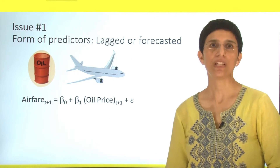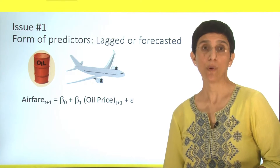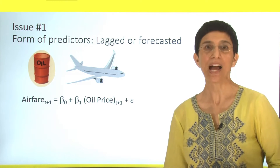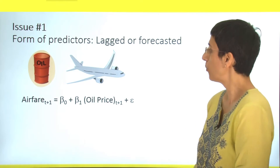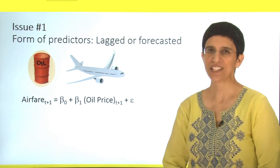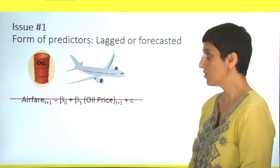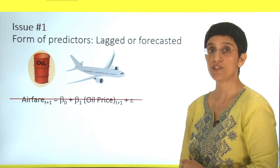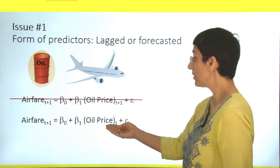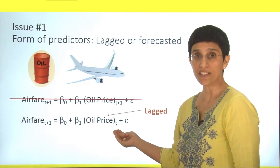The first issue relates to the form of the predictors we're going to put into our model. Suppose we're trying to forecast airfare and want to use oil prices as an input. Ideally, we would include oil price at the same time period we're trying to forecast — for example, if we're forecasting airfare at time t plus 1, we would want to know oil prices at time t plus 1. Obviously, we don't have that information, because oil prices are very hard to know in advance. One option is to use a lagged version, taking oil prices at the last time point measured. If we're currently at time t forecasting airfare at t plus 1, we include oil price at time t. This is called a lagged predictor.